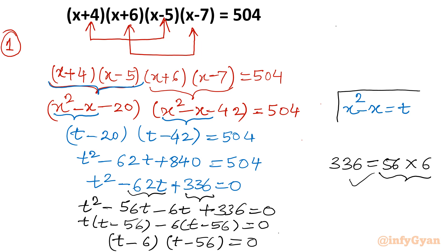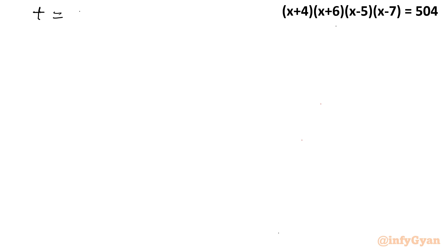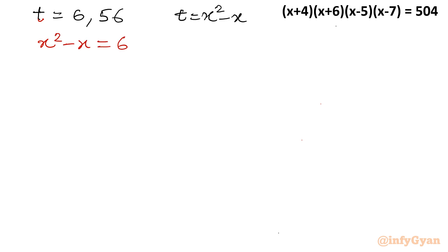Now we substitute back using our substitution t = x²-x. So we have two cases: x²-x = 6 (Equation 1) and x²-x = 56 (Equation 2). We will solve these two quadratics and collect our answers.